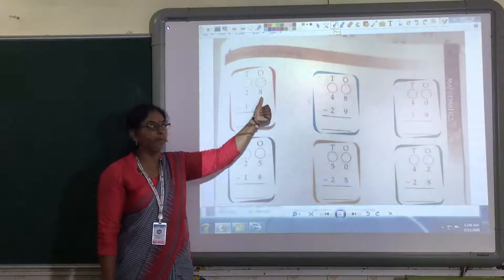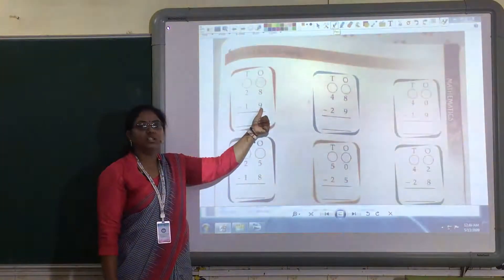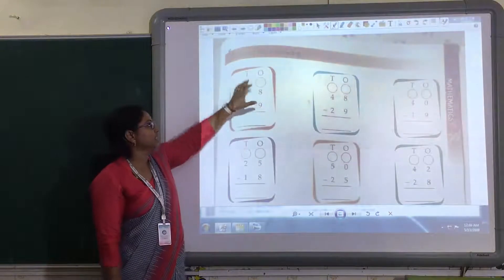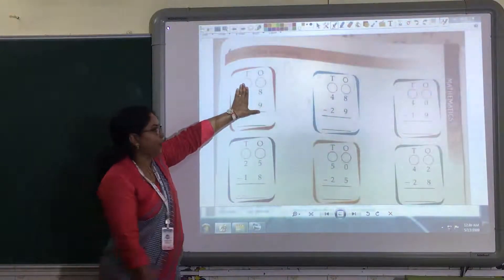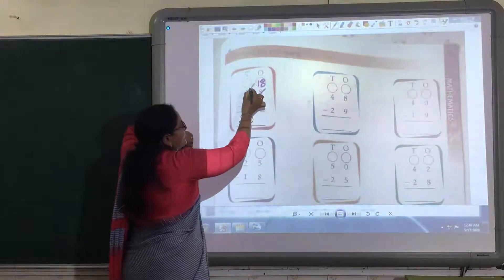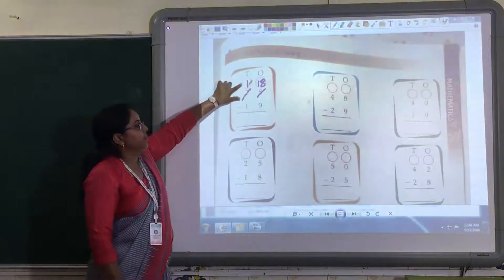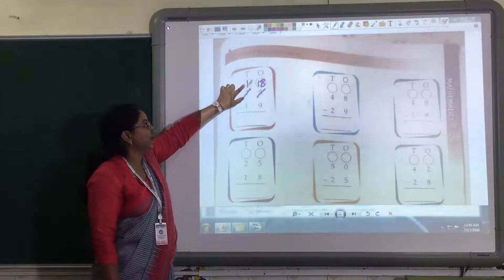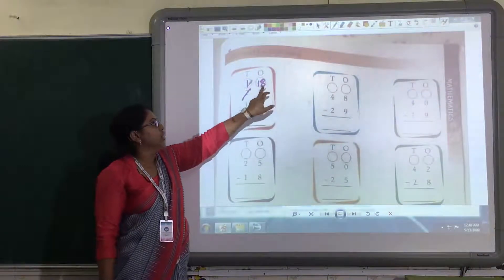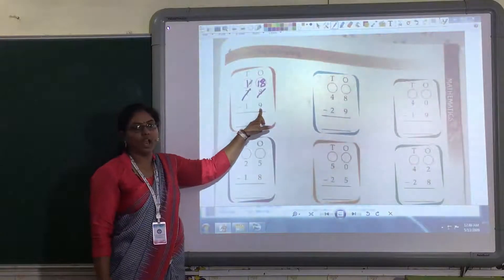Here, these 2 circles are given to regroup it. And here, the column is given of 10's and 1's. From 28, you have to minus 19. So, in this way, how are we going to do? Now, again, as I told you, 8 is a smaller number and 9 is a bigger number. We cannot minus this bigger number from smaller number. So, in this case, we are going to regroup it. Suppose, this 8 will become 18 and this 2 we have to cut and write here 1.